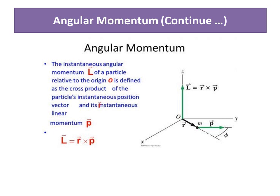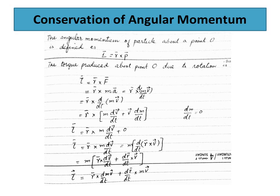The L component of the angular momentum vector is perpendicular to the plane formed by r and P, and is directed along the z-axis. The direction of the angular momentum is perpendicular to this plane. Mathematically, L equals r cross P. This leads us to the conservation of angular momentum.